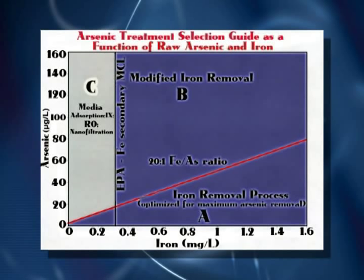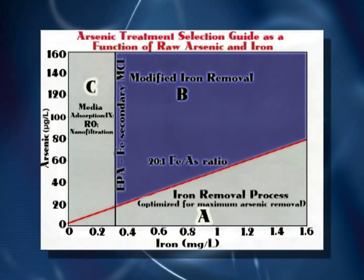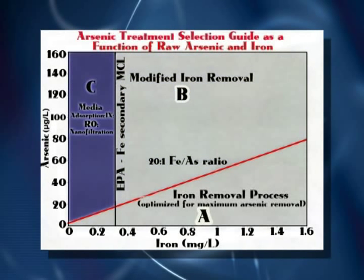If a system's water falls within zone A or B, it is probably already treating for iron removal, and the treatment process can be optimized or modified to meet arsenic removal requirements. If the system's water quality is in zone B, additional iron can be added to meet arsenic removal requirements, giving arsenic adequate adsorption sites to be removed by filtration. Systems with water quality in zone C should look at a larger array of treatment options.